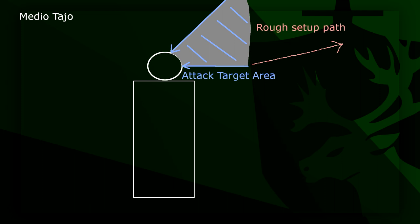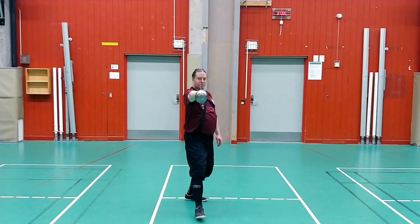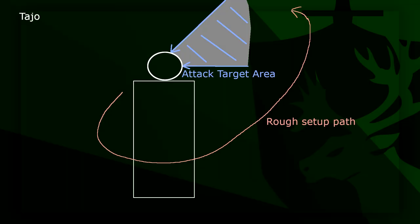Medio Tajo is a half cut on the inside — the right side for a right-handed fencer. The cut is usually done first by pulling back to get an arc, then a straight cut. Often the cut is done from a position so the setup can be omitted, for example doing it from a Tajo 2. The cut is often delivered with a step.